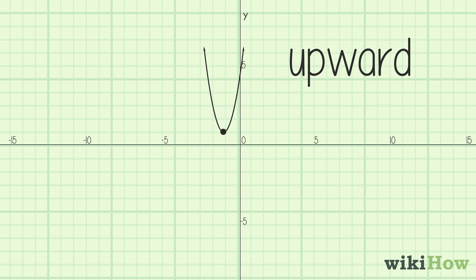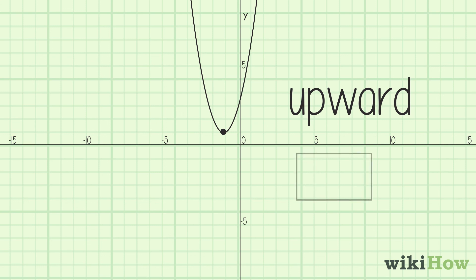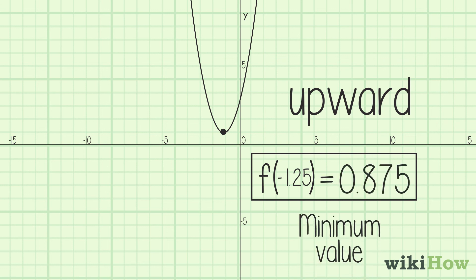In this example, since the parabola opens upward, f(negative 1.25) equals 0.875 is the minimum value of the function.